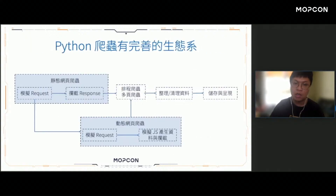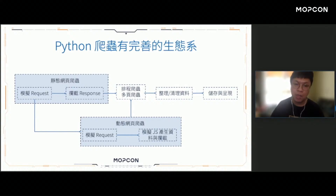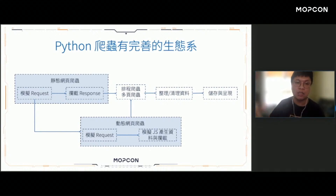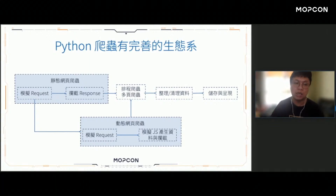我們要做的事情是利用一個工具叫做Selenium，這個工具是一個網頁自動化測試的工具，過去我們可能會利用它幫助我們自動化測試前端頁面是否運行正常。我們就利用這個工具來做到模擬開啟瀏覽器、模擬控制瀏覽器行為的目的。在Python爬蟲的世界當中其實有非常完善的生態系，不管是靜態網頁爬蟲的requests、動態網頁爬蟲的Selenium，或者後續的排程、資料清理、儲存呈現等等，都有非常多的工具可以使用。這就是為什麼近年來這麼多人喜歡用Python——語法簡單，且在解決不同問題都有對應的工具及生態系。